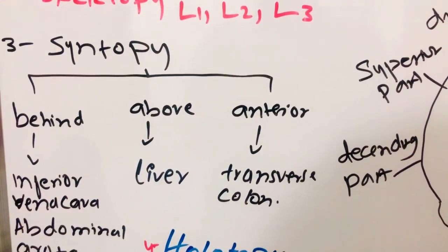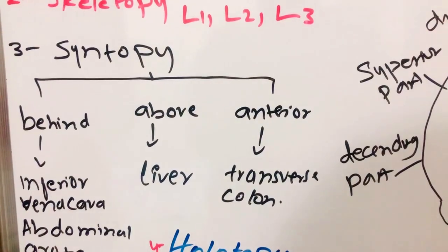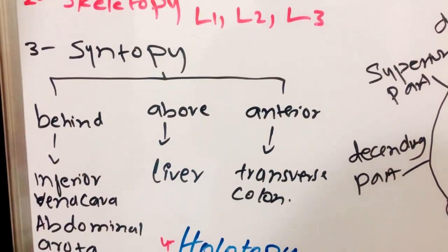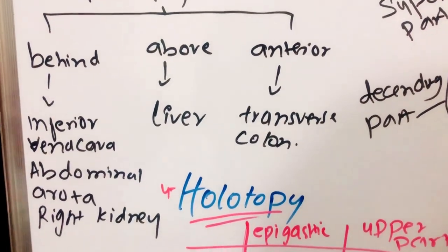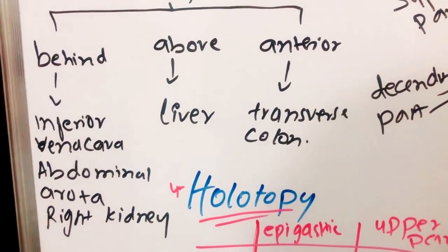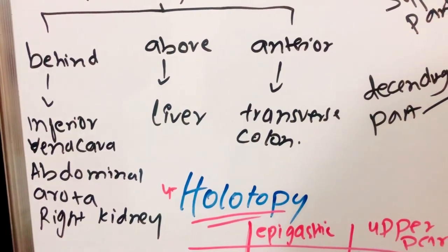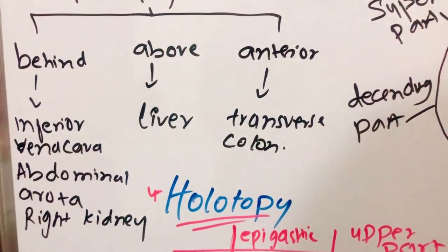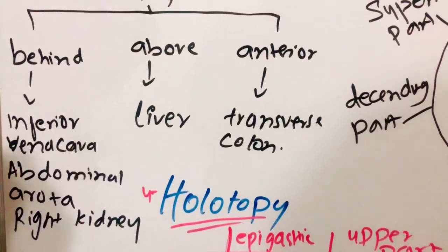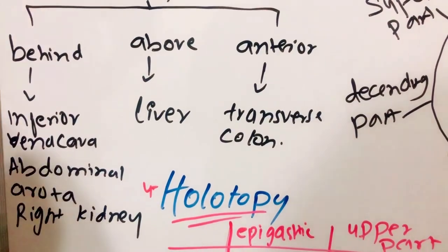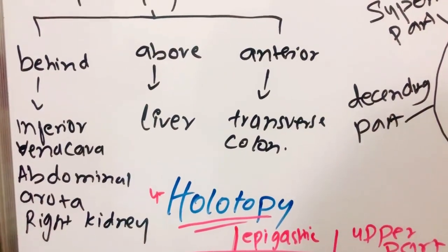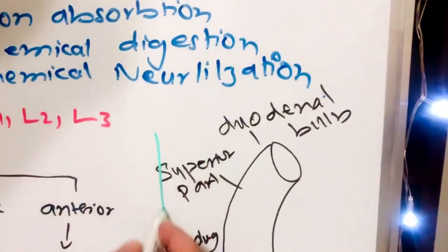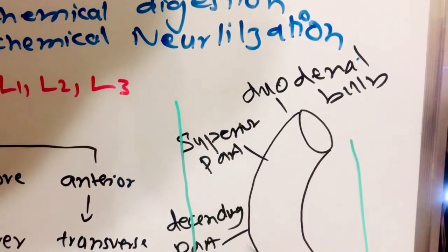Now we will discuss the syntopy of the duodenum. Syntopy is the relation of organs to the small intestine. Behind the duodenum we have the inferior vena cava and the abdominal aorta. The right kidney is just behind the duodenum. Above the duodenum there is the liver, and anteriorly it has the transverse colon, as we can see here.